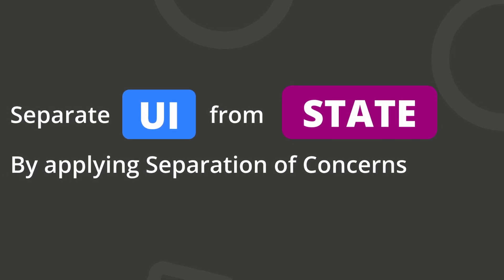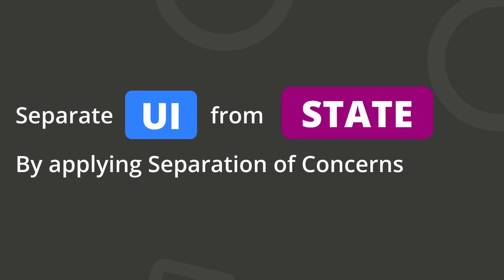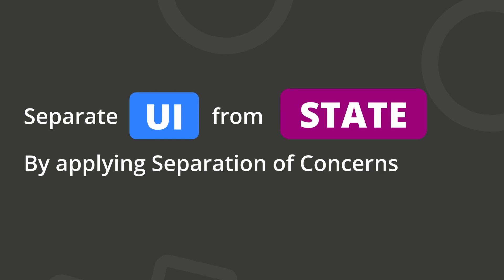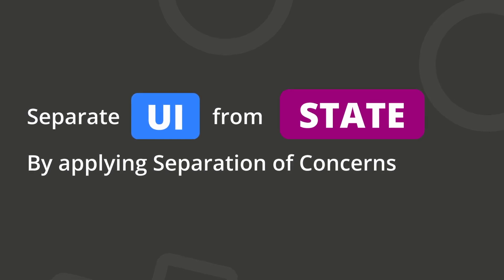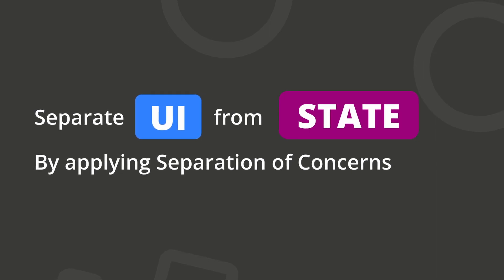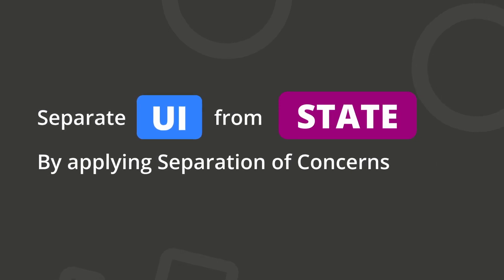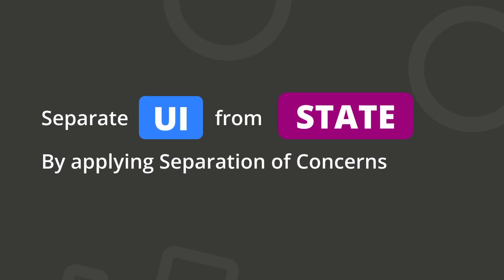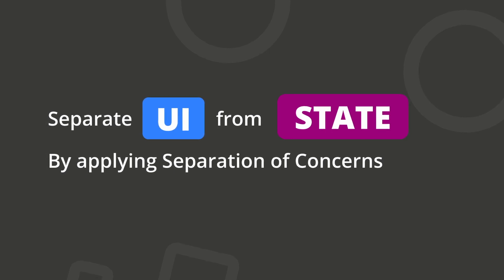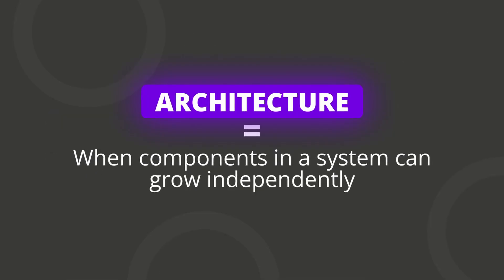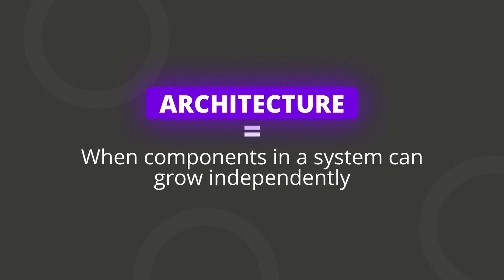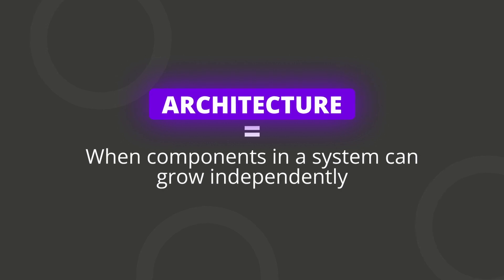I want to go over the idea of separating your UI from your state management. Most engineers have heard of terms like architecture, separation of concerns, and single responsibility, but I haven't seen many clear guides on an actionable way to apply this. If you don't understand this from first principles, it leaves you at the mercy of ideas like 'this is the best architecture for your app.' I have a simple system that I've been using for years to drastically improve codebases over time with incremental steps. Architecture is just a fancy way of saying separate your code into components that grow independently.